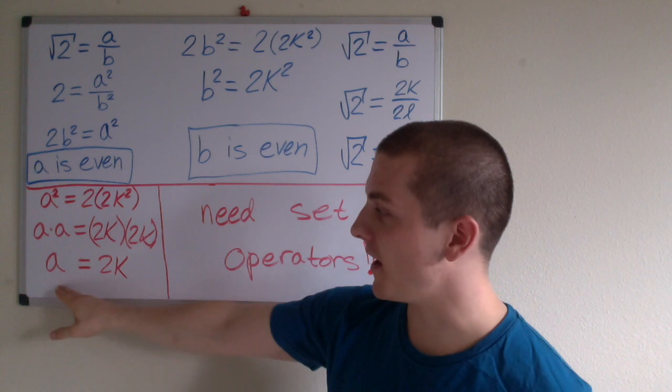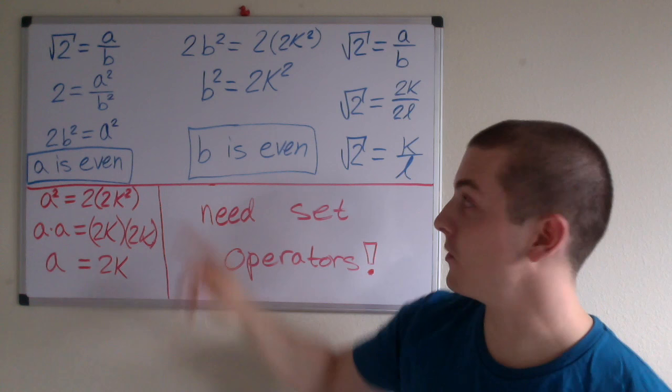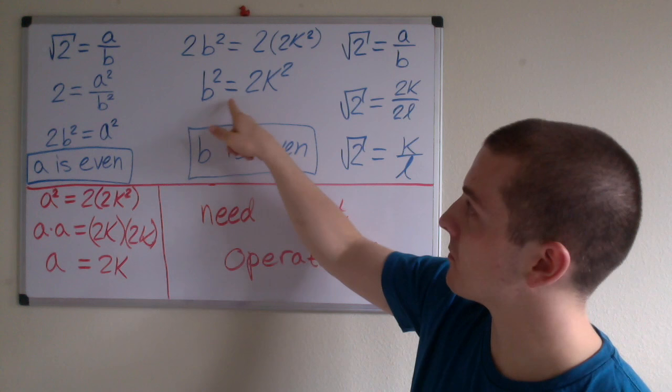I can now substitute 2 times 2k squared for a squared, and that leaves us with b squared equals 2k squared once these twos cancel out. Now, this also means that b squared is even, because b squared equals 2 times some integer, which is to say that b is also even, following this same logic.